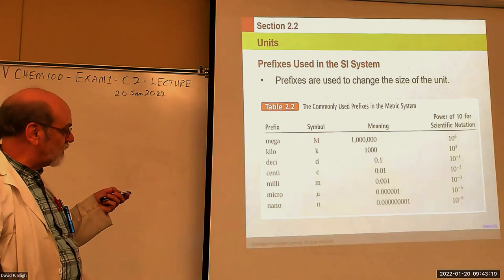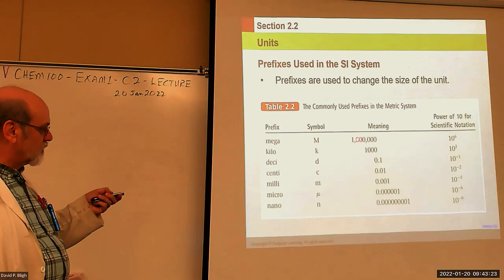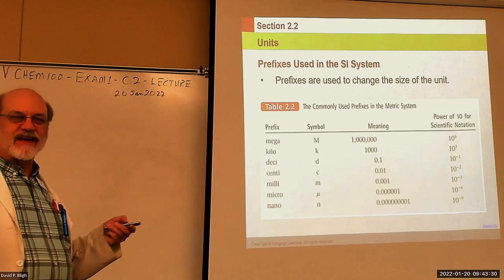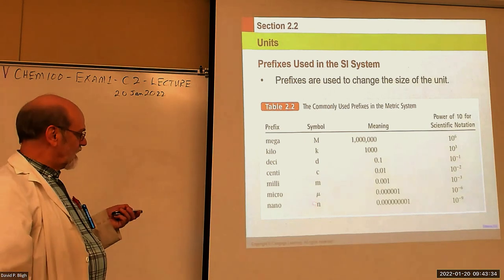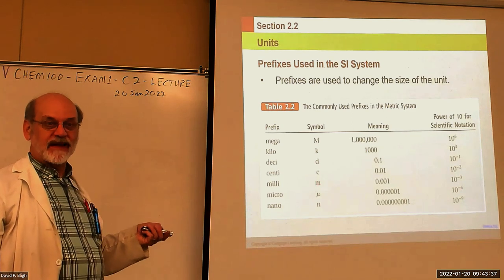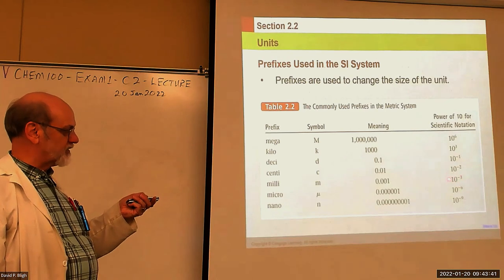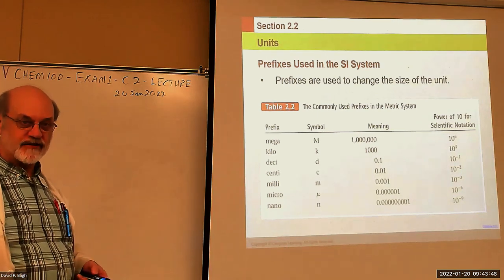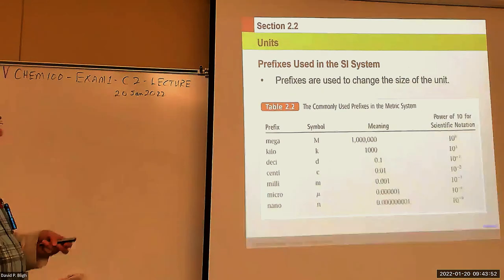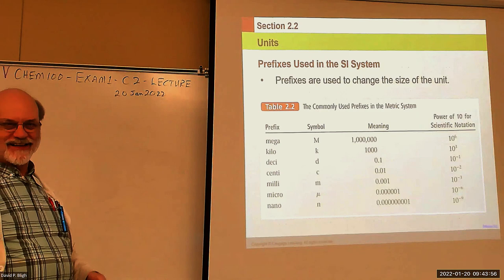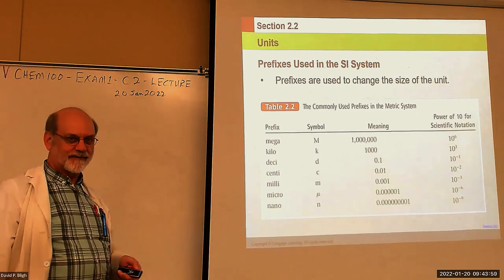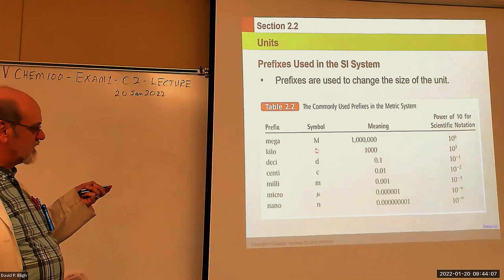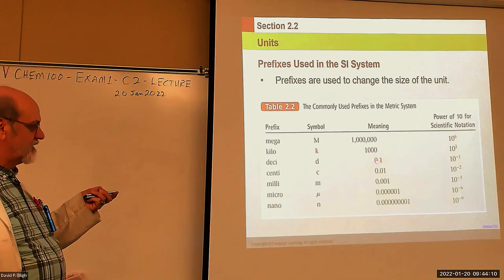Here are the prefixes you need to know. Mega is a million — that's a capital M. Little m goes the opposite direction: milli is a thousandth. So a megagram is a million grams, and a milligram is a thousandth of a gram. Kilo (little k) means a thousand. Deci (little d) means a tenth. Centi — we know centimeters — is a hundredth of a meter. Then micrometer uses the Greek symbol mu, meaning one millionth. These prefixes are extremely important.